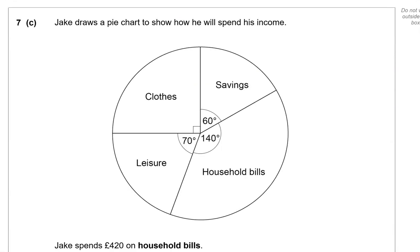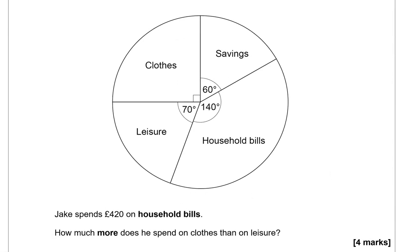Jake draws a pie chart to show how he'll spend his income. Jake spends 420 pounds on household bills. How much more does he spend on clothes than on leisure? So that is 420 pounds on household bills. We're interested to work out how much more he spends on clothes than on leisure. So we've got leisure here and we've got clothes here. So looking at the angles within the circle, we've got household bills being represented by 140 degrees.